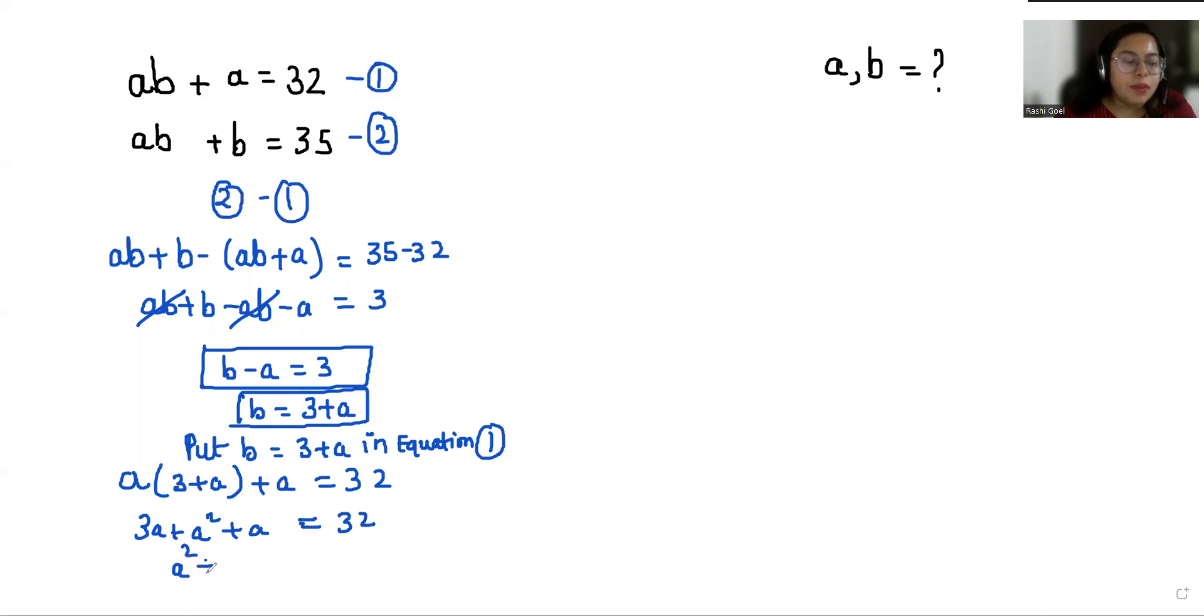So A squared plus 4A. This 32 comes to this side with negative sign, minus 32 equals 0. Now it looks like a quadratic equation.